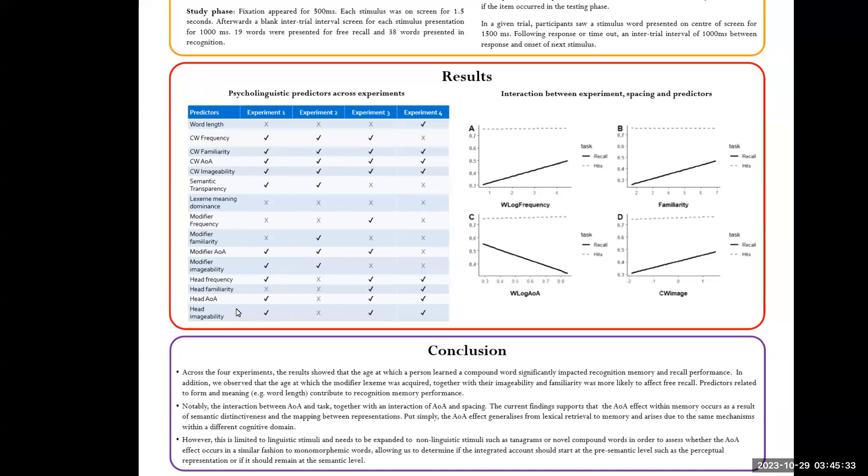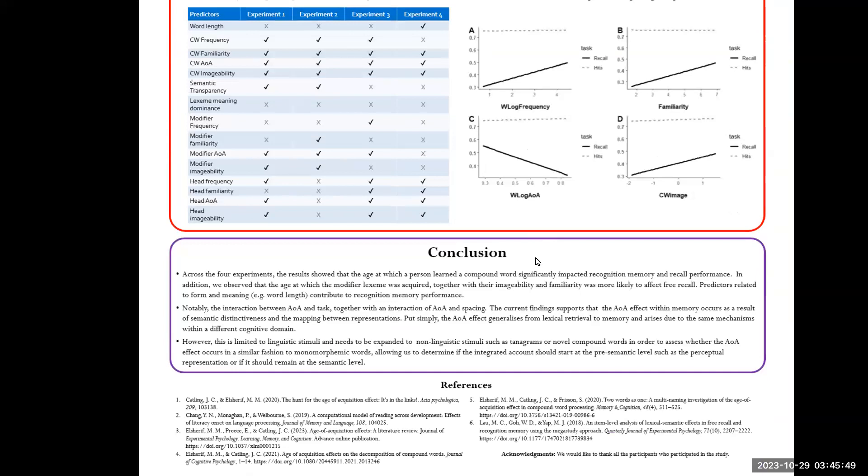And whereas the head lexeme, so plane or airplane, contributes more to the recognition memory and sometimes to free recall. And what we see is the slope is a lot steeper for free recall than for recognition memory. And what's really cool is across the four experiments, we can say that the age of which someone learns a compound word impacts recognition memory and recall form. And the age of which we acquire the modifier lexeme with familiarity and imageability will affect free recall form.